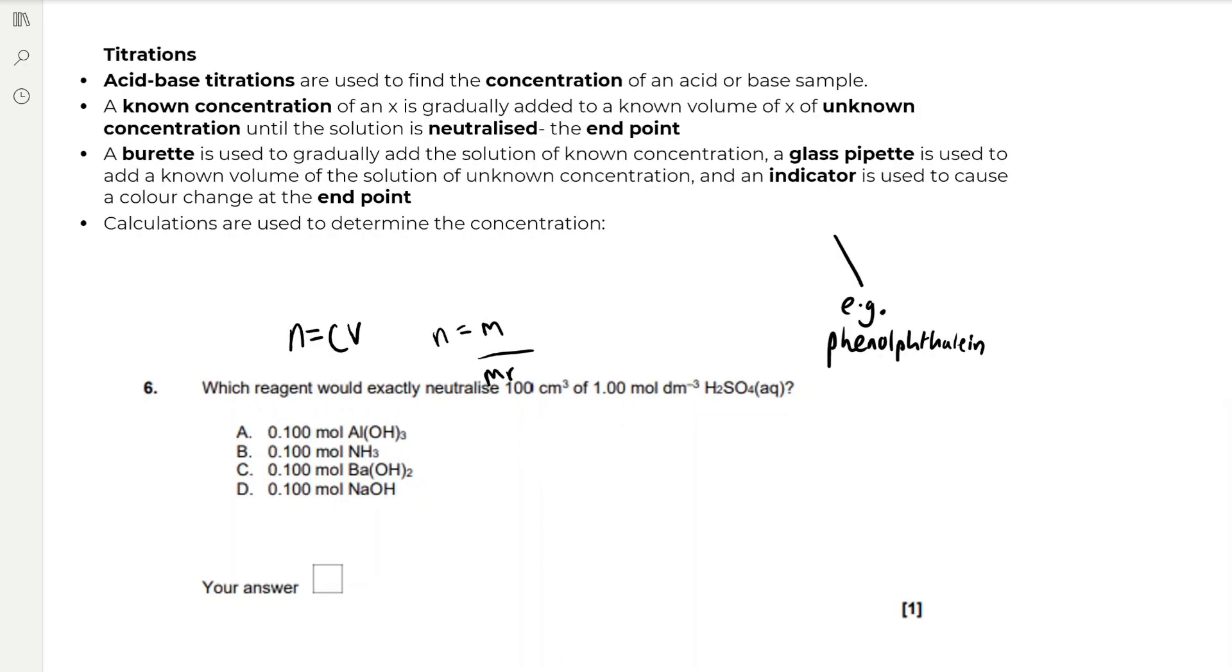So titrations. Acid-base titrations are used to find the concentration of an acid or base sample. A known concentration of X is gradually added to a known volume of X of unknown concentration, until the solution is neutralised, the endpoint. A burette is used to gradually add the solution of known concentration, and a glass pipette is used to add a known volume of the solution of unknown concentration. We also use an indicator to cause a colour change at the endpoint, so that's the point of neutralisation in an acid-base titration. Calculations are used to determine the concentration. We use the formulae N equals CV, which is moles equals concentration times the volume, and moles equals mass over MR, which will help us do titration calculations.